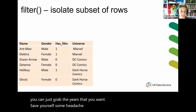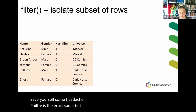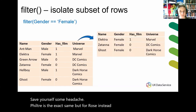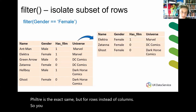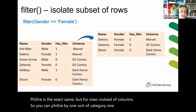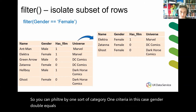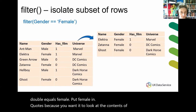Filter is the exact same as select, but for rows instead of columns. You can filter by one category, one criterion. In this case, gender double equals female — put female in quotes, because you want it to look at the contents of a string and match exactly.